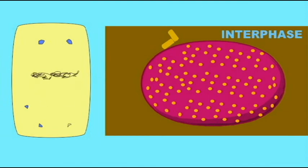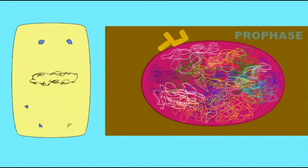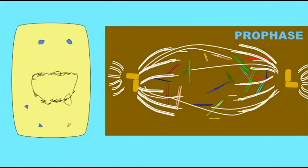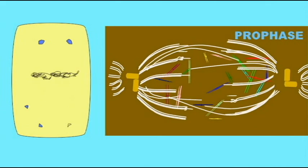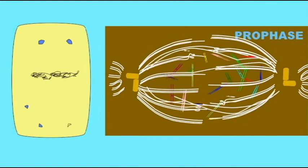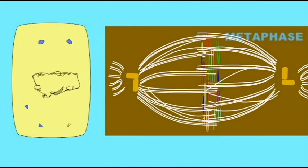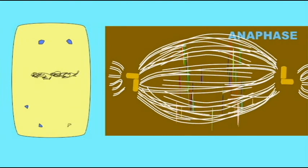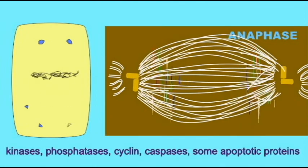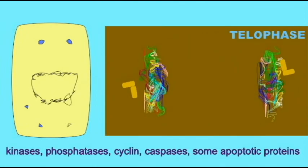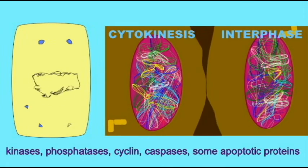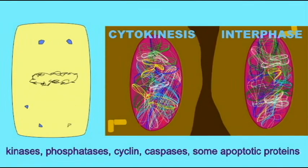Many of the things which complex cells use evolved early in the history of life and can be found in bacteria. So even though bacteria do not divide in the complex mitotic cycle of eukaryotic cells, kinases, phosphatases, cyclins, caspases, and some apoptotic proteins are found in bacteria.